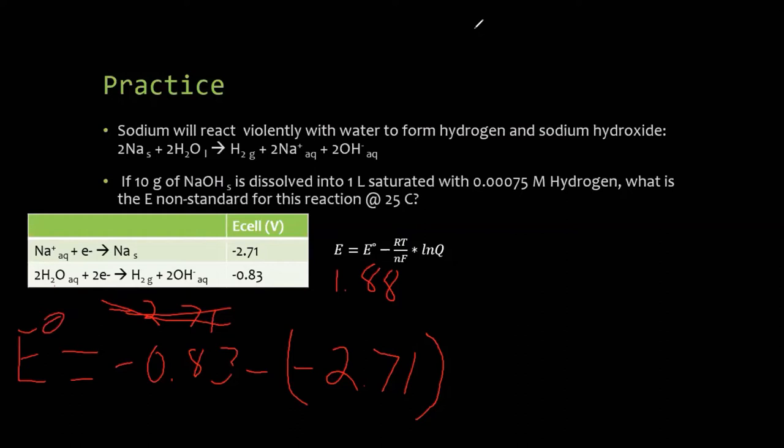Now our E cell non-standard now accounts for how much sodium, how much hydroxide, and how much of everything. So our Q. Our Q is going to be all products. Hydrogen. Na plus squared. And OH minus squared. All over 1. Because sodium solid doesn't get included. Water doesn't get included. Pure liquids, pure solids, not included.